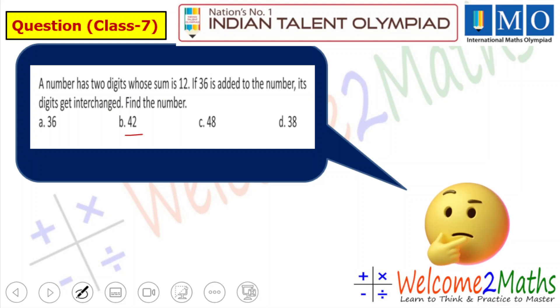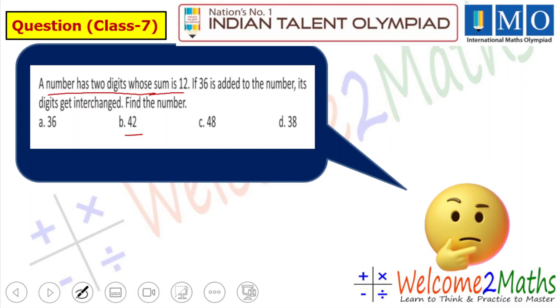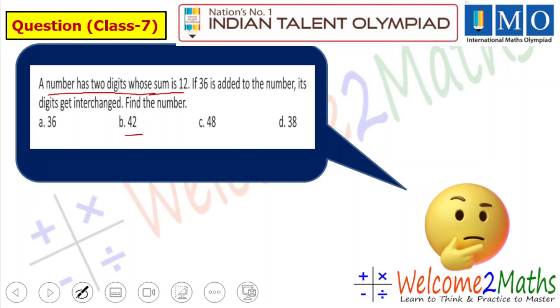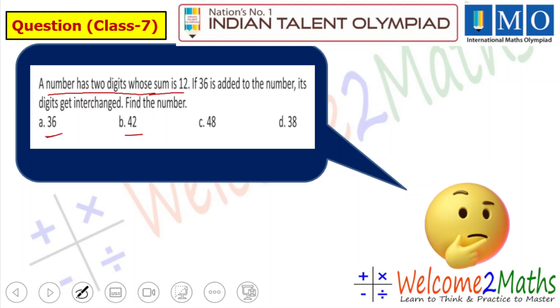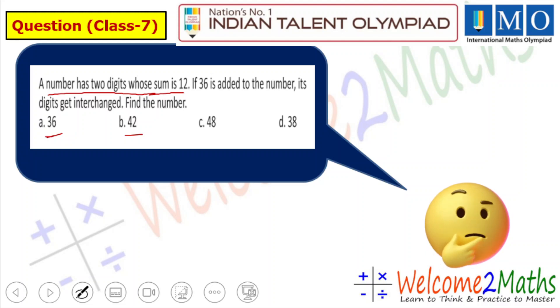The condition is that a number has 2 digits whose sum is 12. Let us add 3 and 6: that's 9, not 12. So let's move on. The next option is 4 and 2: 4 plus 2 is 6.